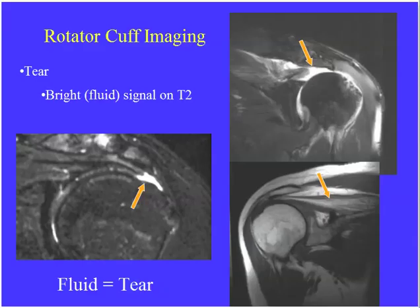Rotator cuff tear is a very common entity on these exams. To diagnose it, find the musculotendinous junction on a coronal image of the shoulder, follow the cuff all the way across — it should touch the bone on the greater tuberosity. If there's an area of high signal abnormality right in the location where the cuff is expected, that represents a full thickness tear of the supraspinatus tendon.